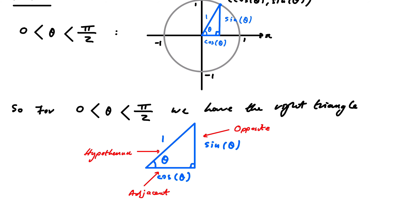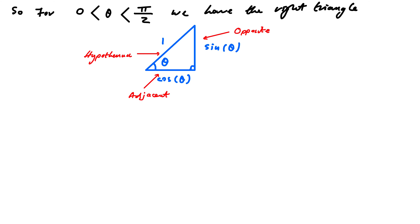These are just names associated with this right angle triangle with internal angle θ. Now I want to make an observation about similar triangles.